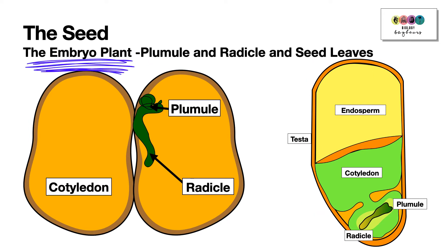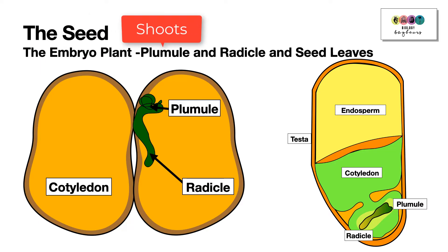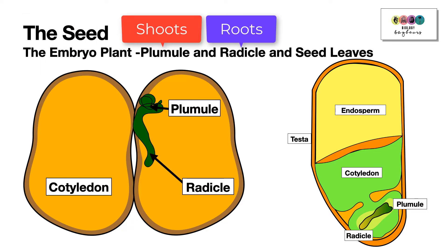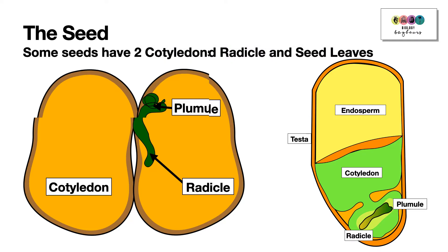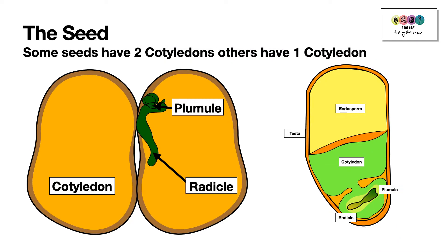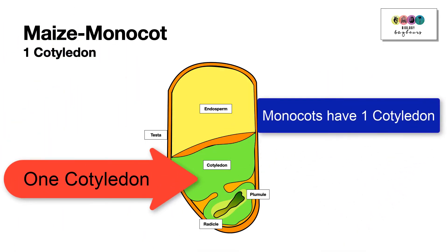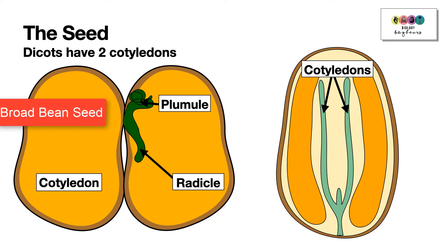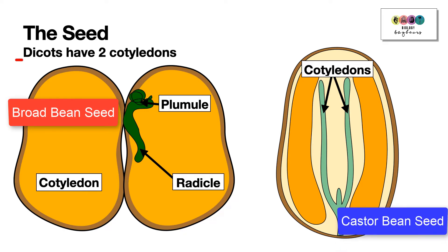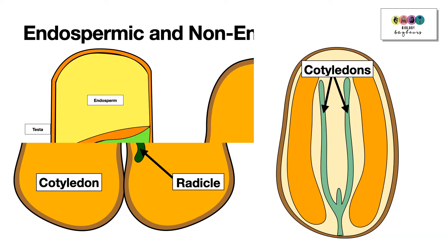The embryo plant is made up of very particular parts. The plumule will become the shoots, the radicle becomes the root, and it also has seed leaves called cotyledons. Seeds can have one or two cotyledons depending on the type of plant. Monocots, like maize, have one cotyledon in their seeds. Dicots, like broad bean and castor seeds, have two cotyledons.